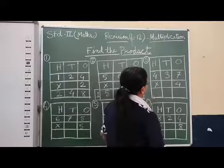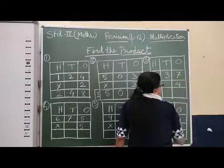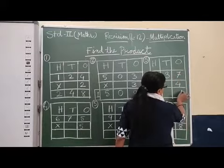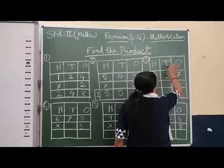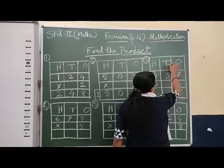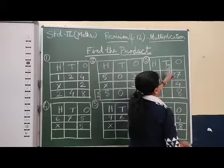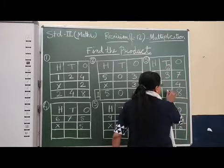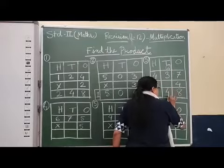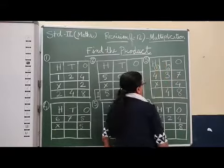Now take the next one. Table of four. One's place, four times seven, twenty-eight. We will write eight here and two on the top. Twenty-eight, okay? Now three times four, twelve, and plus two. Twelve plus two, fourteen. We will write four here.